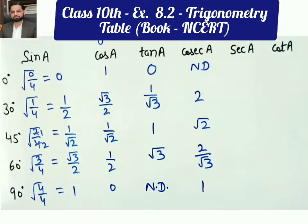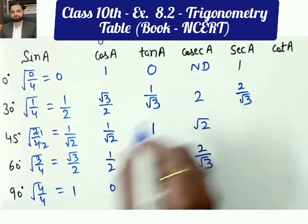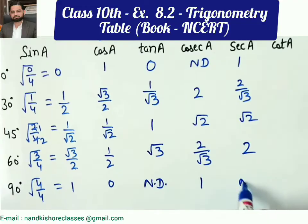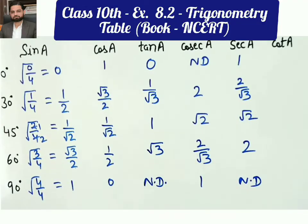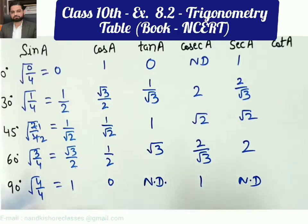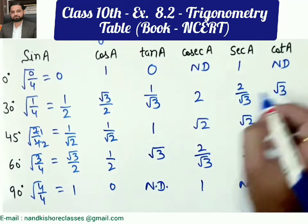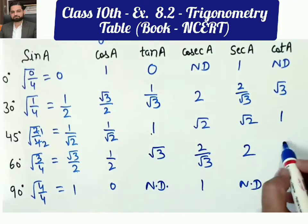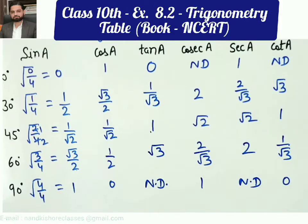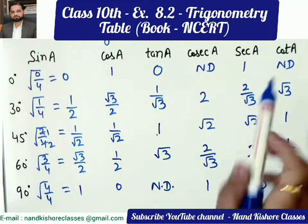For secant — reciprocal of cosine: 1→1, √3/2→2/√3, 1/√2→√2, 1/2→2, and 0→not defined. For cotangent — reciprocal of tangent: 0→not defined, 1/√3→√3, 1→1, √3→1/√3, and not defined→0. Remember: reciprocal of 0 is not defined, and reciprocal of not defined is 0.